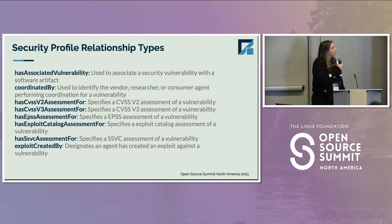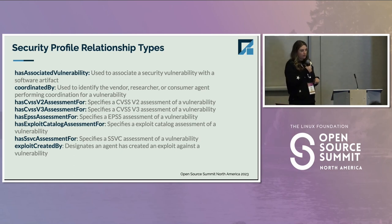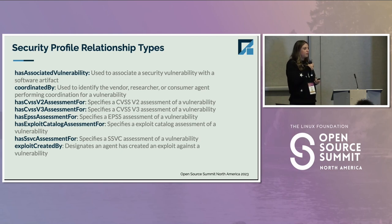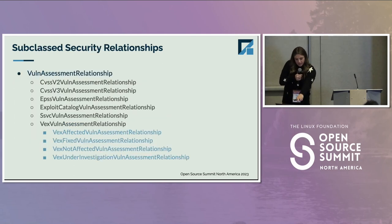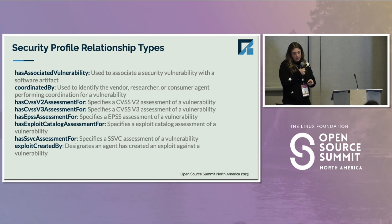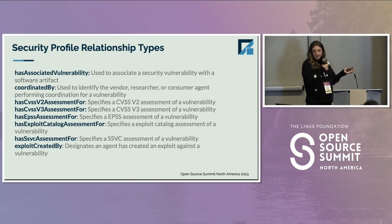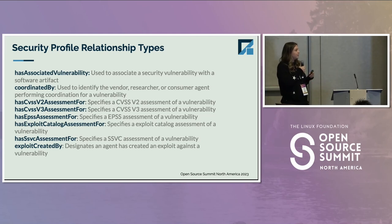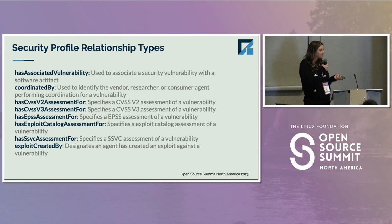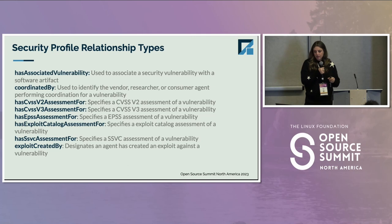We also added two core security-related relationship types. You'll see something like has CVSS V2 assessment for, which is going to be used in relationship with the CVSS V2 vuln assessment relationship. But there's also relationships like has-associated-vulnerability, which simply says that there's a vulnerability that exists and in some way it's associated with a software artifact. This does not mean that the vulnerability affects the software artifact or does not affect it — simply that there's a known relationship published there.